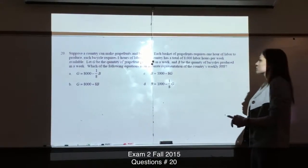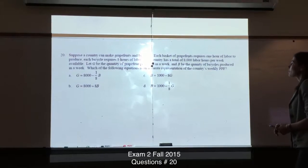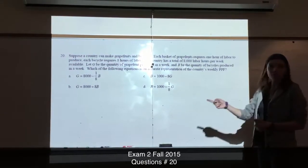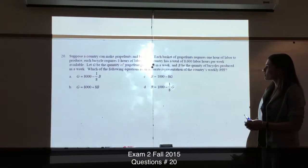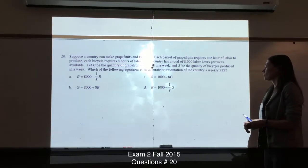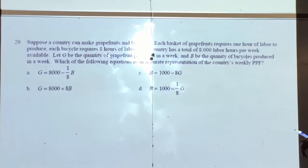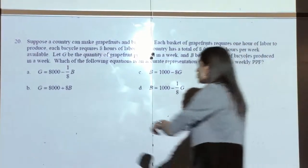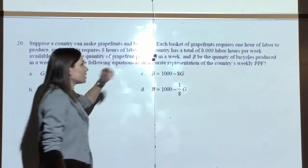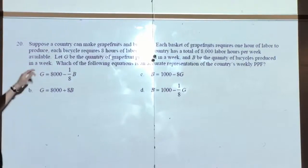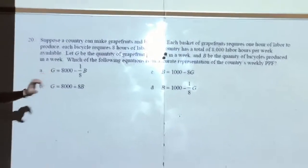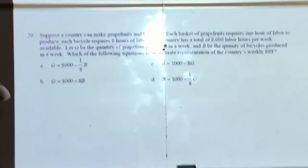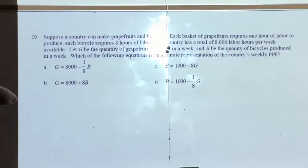Suppose a country can make grapefruits and bicycles. Each basket of grapefruits requires one hour of labor and each bicycle requires eight hours of labor. The country has a total of 8,000 labor hours per week. If G is the quantity of grapefruit produced and B is the quantity of bicycles produced, which of the following equations is an accurate representation of the BPF?